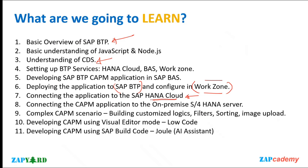We will also connect our CAPM application to the on-premise S4 HANA server — server access will be given to you once you enroll. We will connect the S4 HANA server to SAP BTP via Cloud Connector and consume it in our CAPM application. Then we will go into advanced programming with custom logics, filtering, sorting, image upload, and other advanced functionalities.